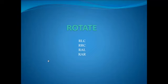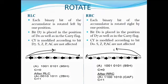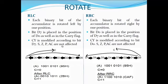Now we have the rotate instruction. It is of four types: RLC, RRC, RAL, and RAR. In RLC, each binary bit of the accumulator is rotated left by one position. Bit D7 is placed in the position of D0 as well as in the carry flag, and the carry flag is modified according to bit D7.